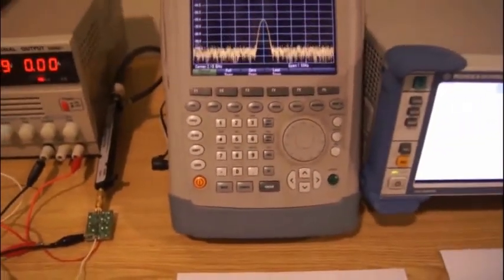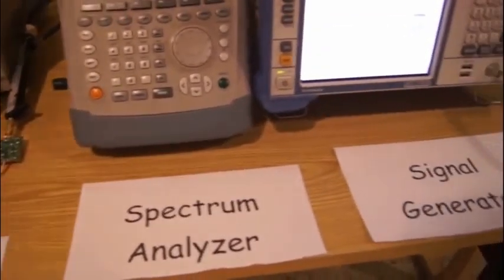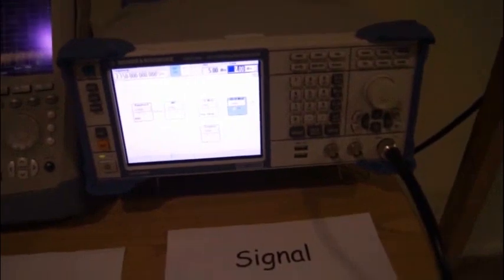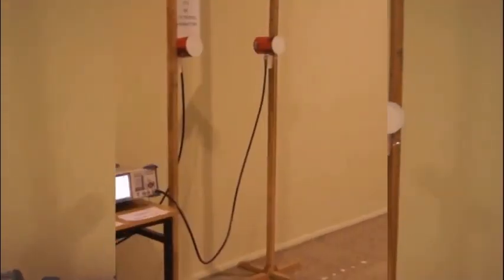Spectrum analyzer shows us the power level and received signal. And our signal generator generates the signal with 2.15 GHz frequency and 5 dBm power. And finally, there are our receiver antenna on the left and transmit antenna on the right.